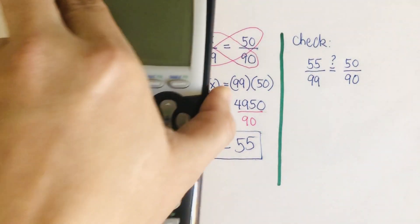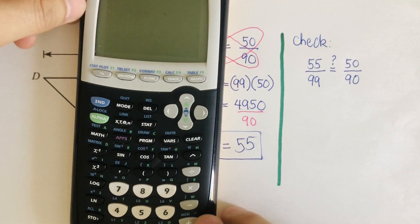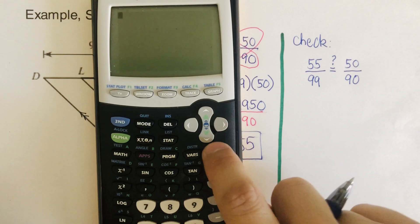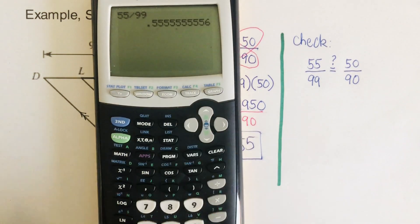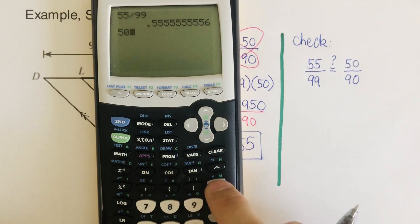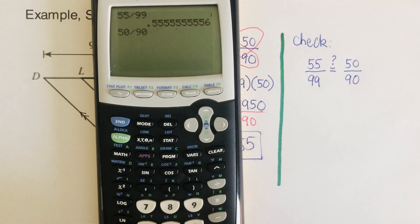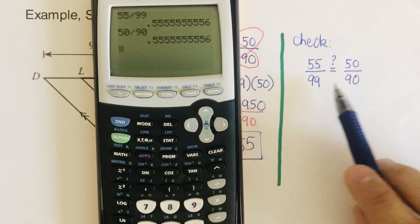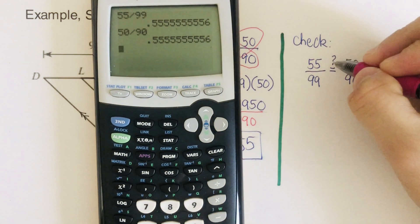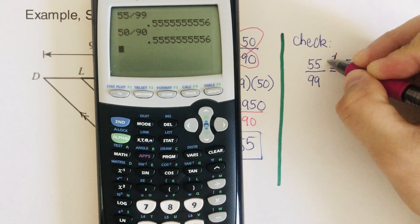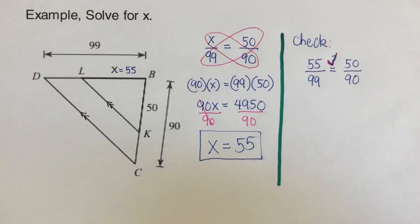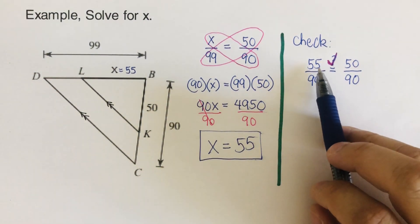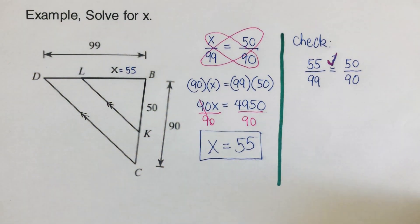I'll set it up on the calculator: 55 divided by 99, that's the number. Now 50 divided by 90 — and they are a match. These two are equal to each other, so our X value of 55 is correct. If you used 54, they wouldn't match up. So X is 55.